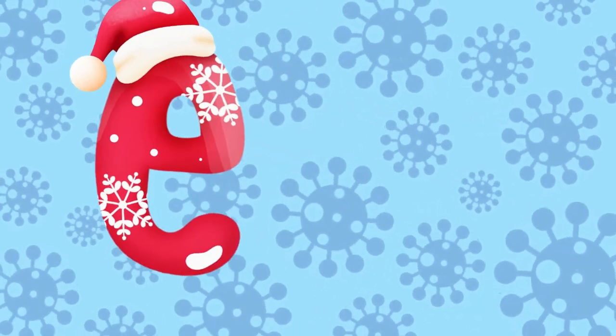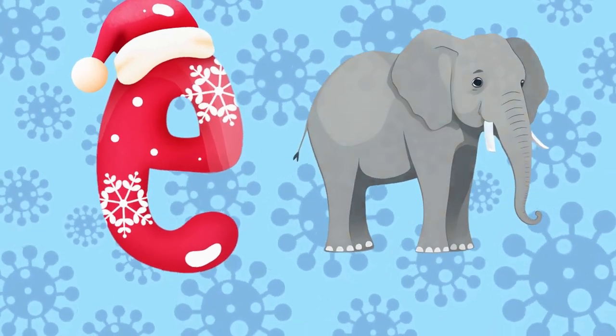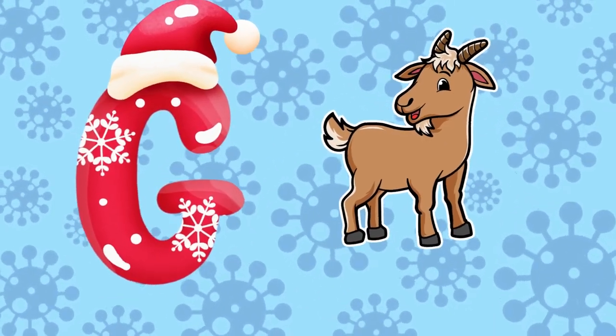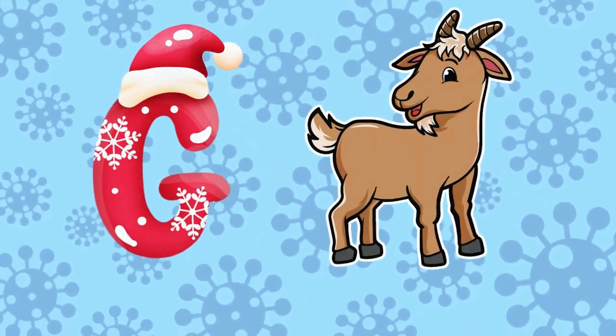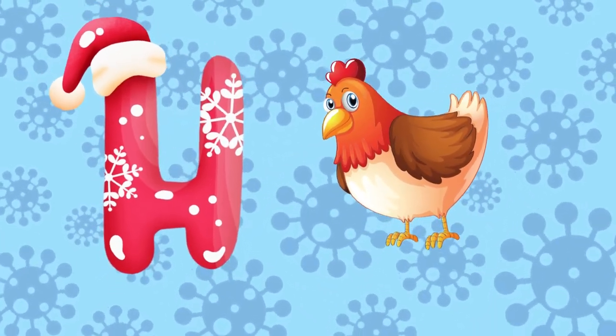E is for elephant, e-e-elephant. F is for frog, p-p-frog. G is for goat, g-g-goat. H is for hand, a-a-hand.